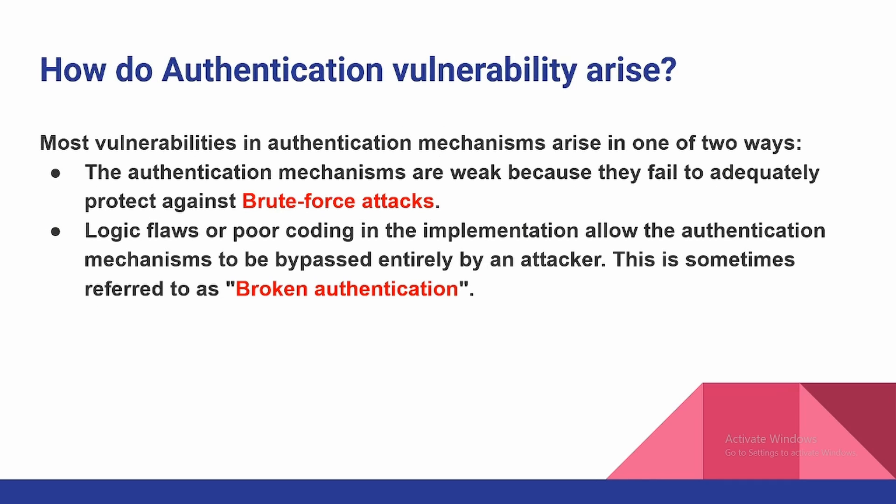But how do authentication vulnerabilities arise? Most vulnerabilities in authentication mechanisms arise in one of two ways. First, the authentication mechanisms are weak because they fail to adequately protect against brute force attacks. Second, logic flaws or poor coding in the implementation allow the authentication mechanism to be bypassed entirely by an attacker. This is sometimes referred to as broken authentication.